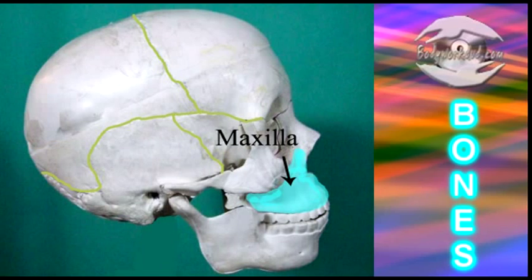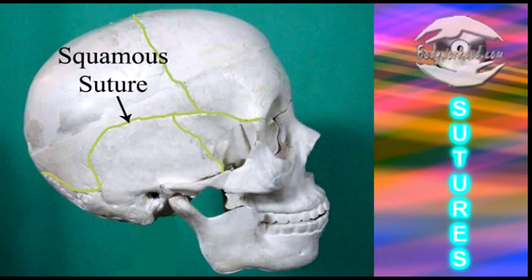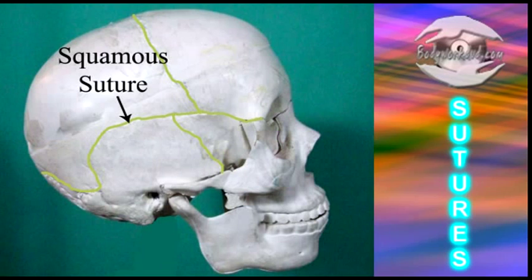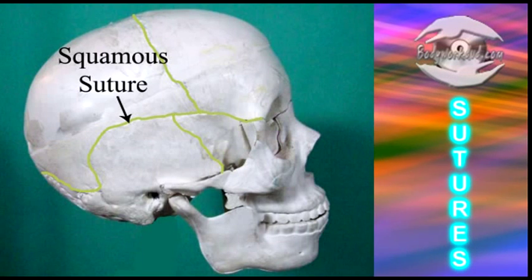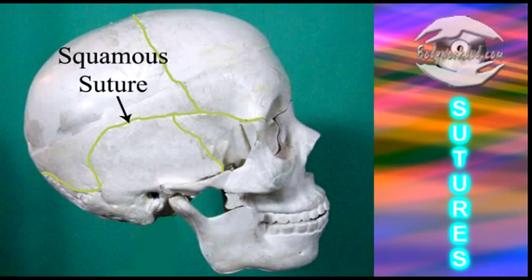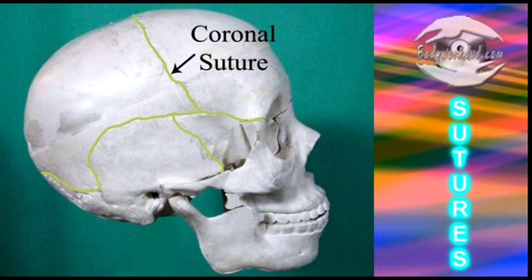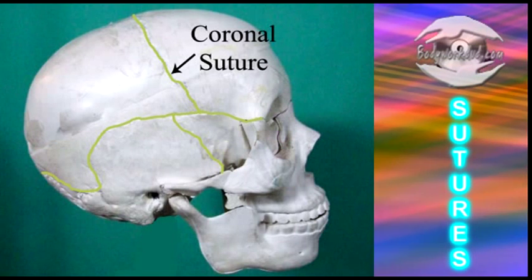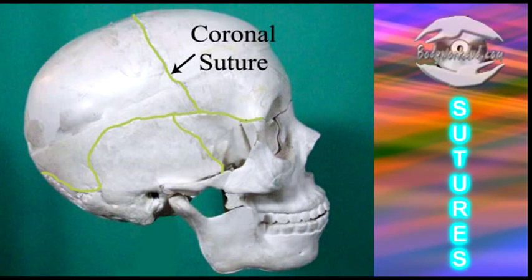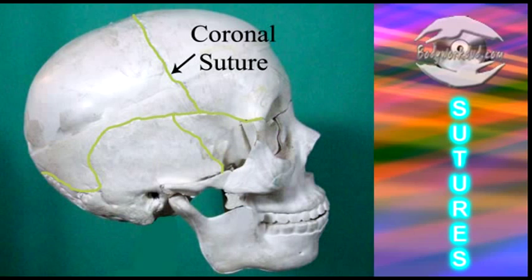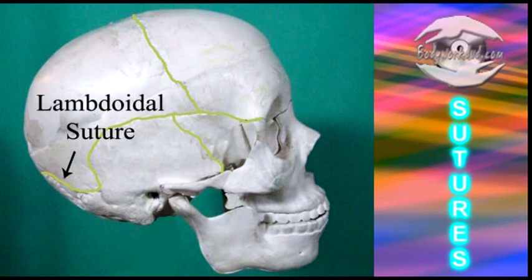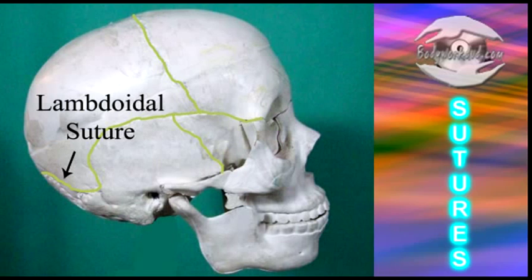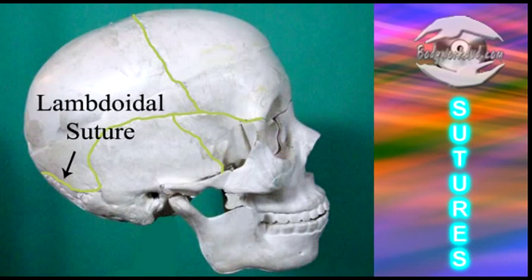Now for some sutures, or joints. This is the squamous suture, located between the parietal and the temporal bones. Next is the coronal suture, between the frontal and parietal bones. The lambdoidal suture is between the occipital and parietal bones.